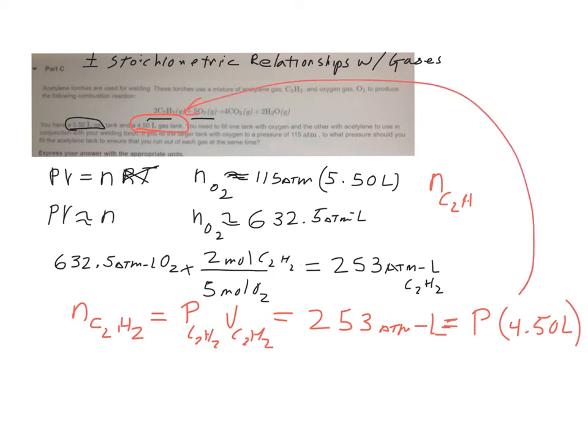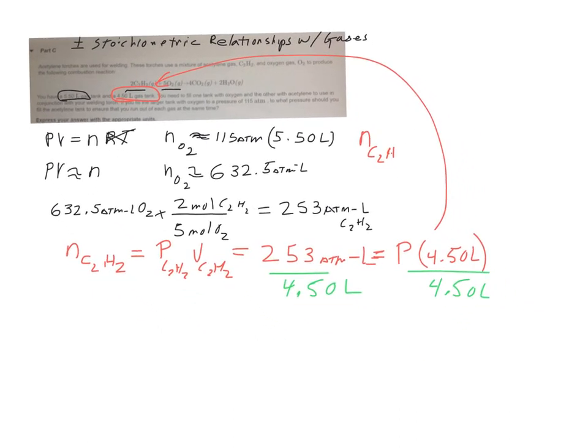So now it's a matter of algebra. I divide both sides by that 4.50 liters. Why do I keep saying 450? 4.50, my word! It's getting close to lunchtime. Do that and it cancels out. Divide by 4.5 and that gives me a pressure of 56.2 atm for my acetylene.